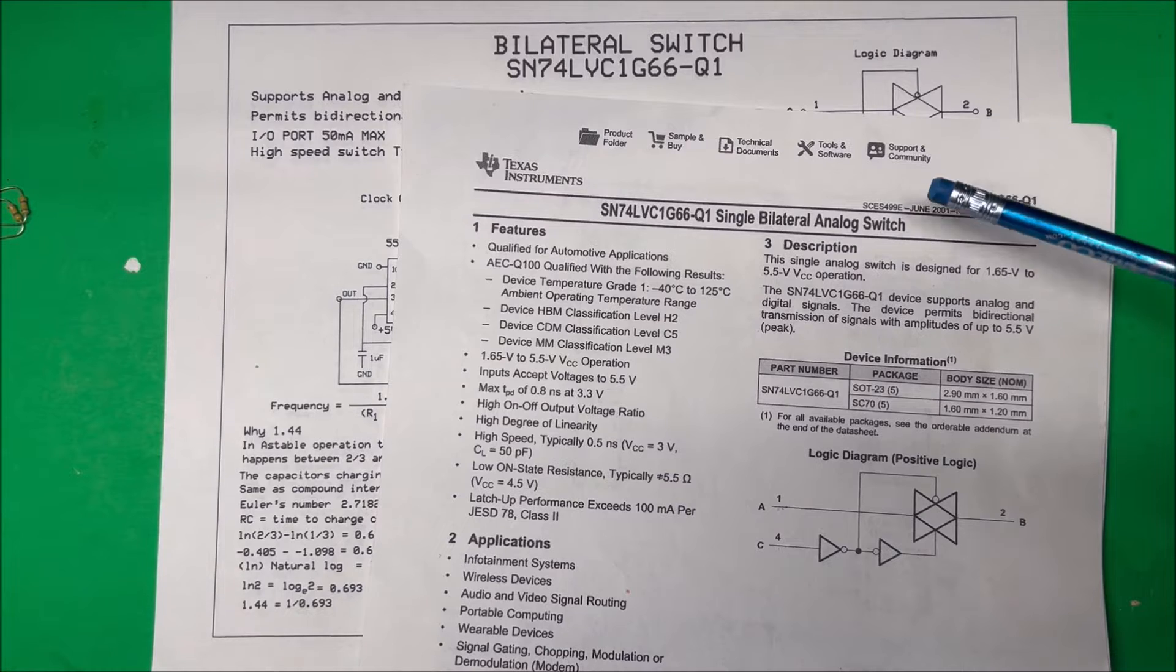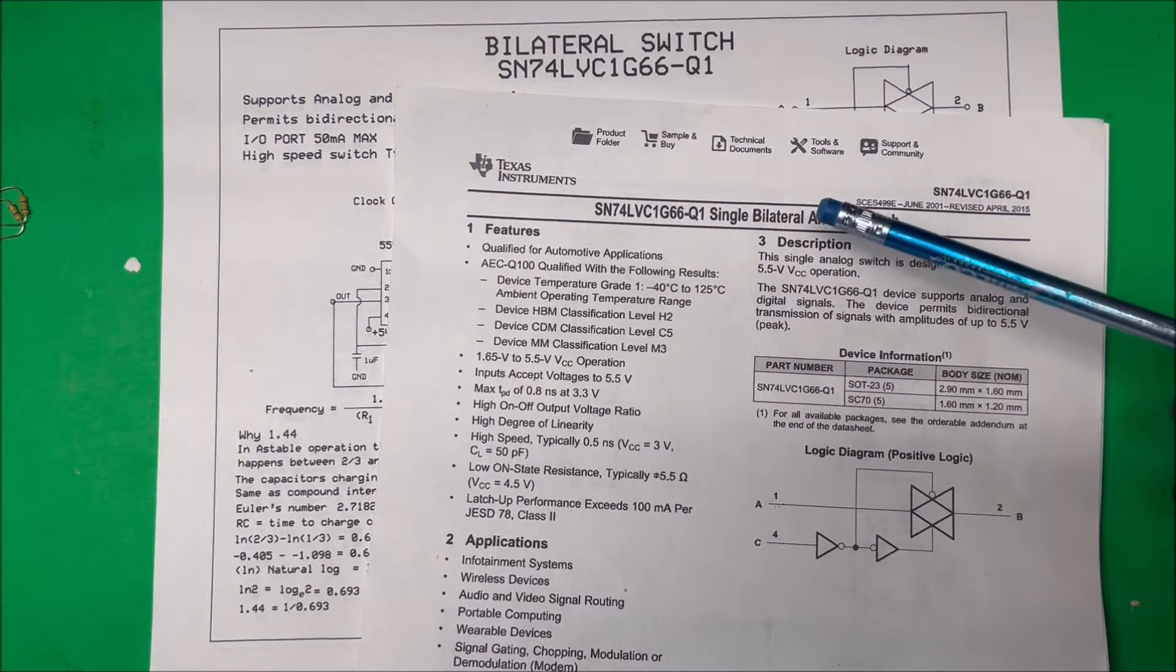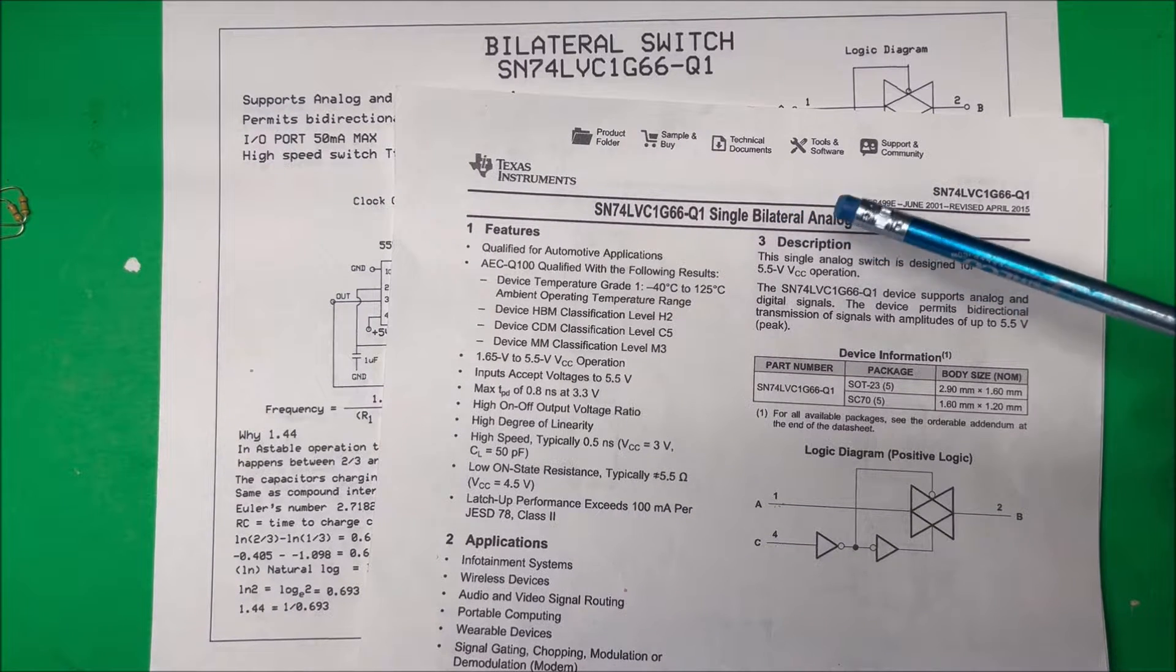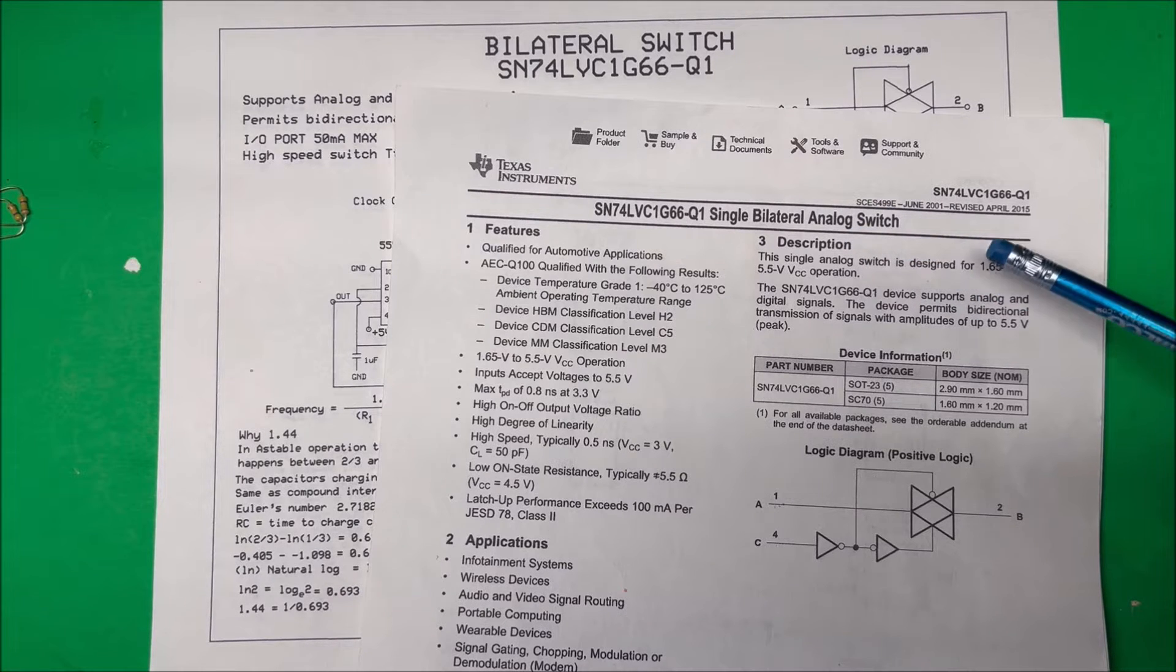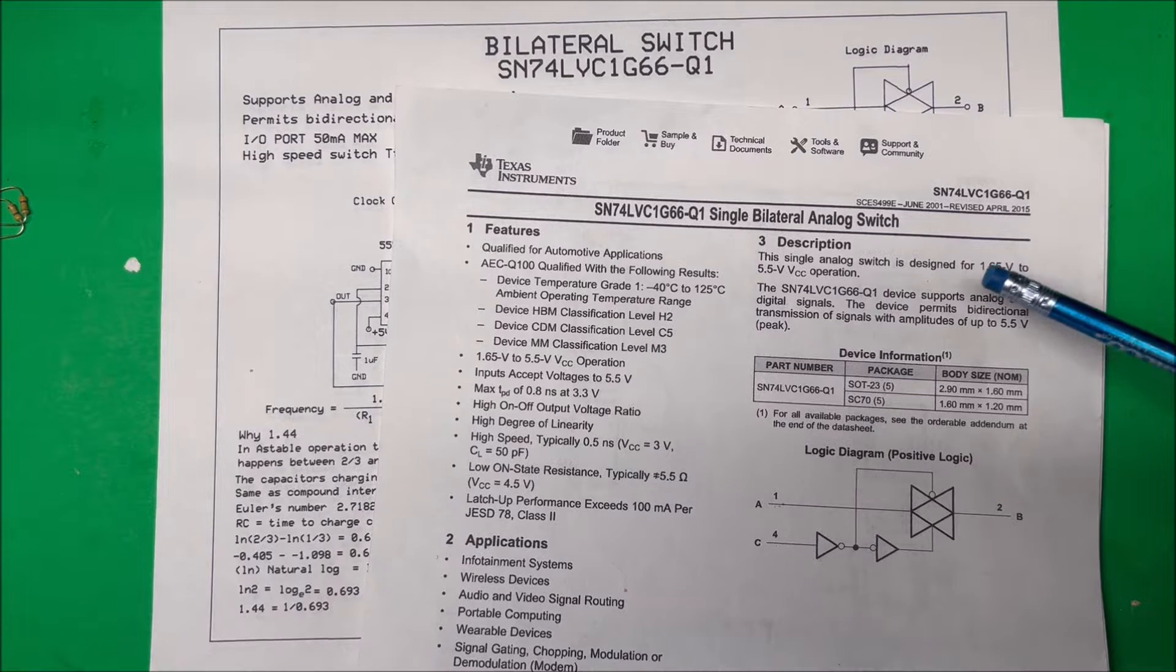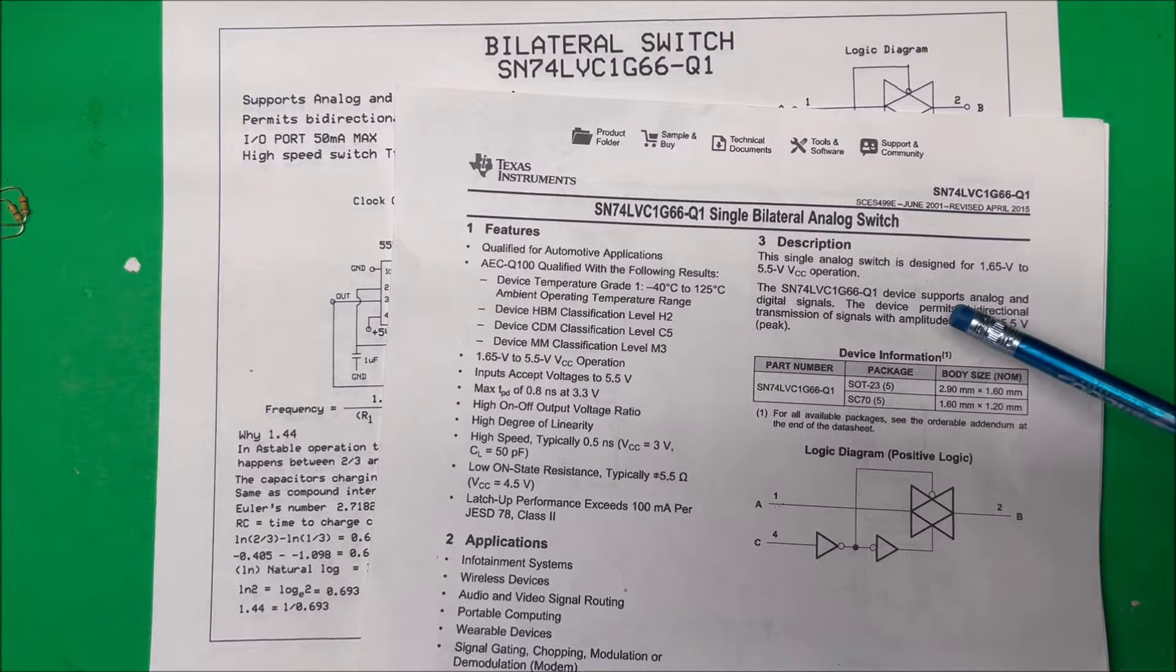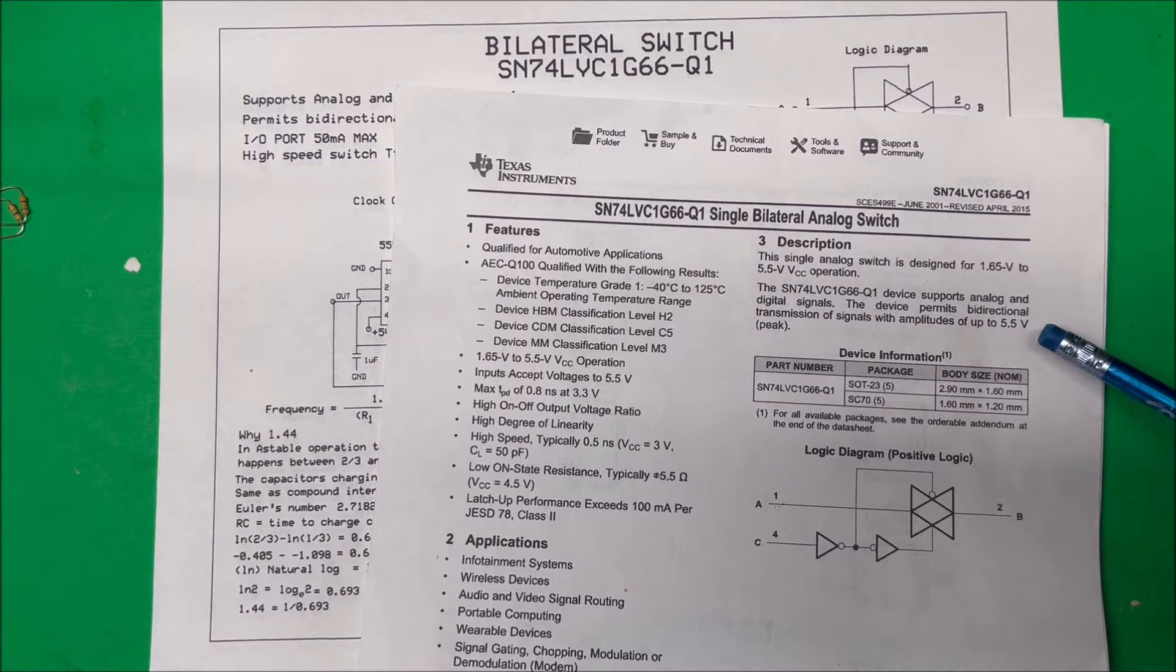Let's take a look at a bilateral switch, an SN74LVC1G66. This is an analog switch designed to operate between 1.65 volts to 5.5 volts VCC. The device permits bi-directional transmission of signals with amplitudes up to 5.5 volts peak.